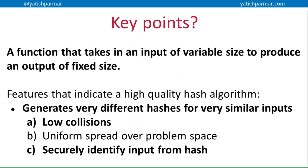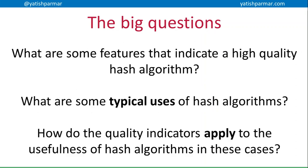The key things to take away: regardless of the size of the input, the hash algorithm generates an output of a fixed size, allowing comparisons. We want to make sure that we don't have collisions — by avoiding collisions, we can securely identify inputs from their hash. The reason we're able to do that is because we're getting very, very different hashes for very similar inputs — even if there are only a couple of bits' difference between two inputs. Those are the things you need to be thinking about when answering exam questions about hash algorithms.